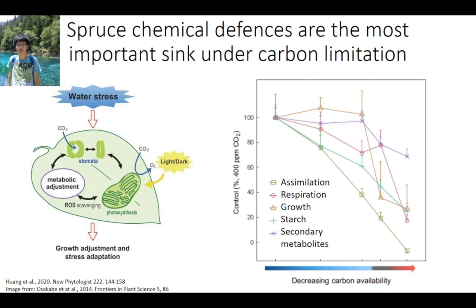Interestingly, we find that even under severe carbon limitation, the plant still invests as much as it can into the production of its defenses — oleoresin and phenolics. This shows very clearly how robust the defense metabolism of these trees is.